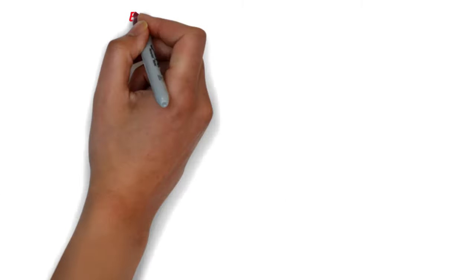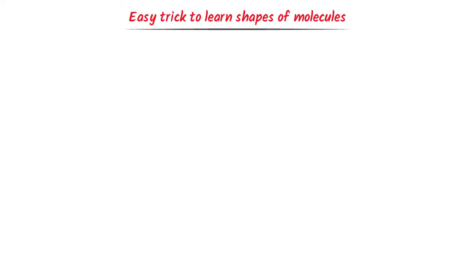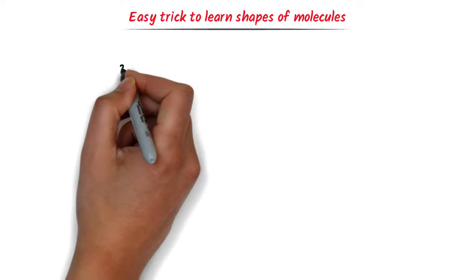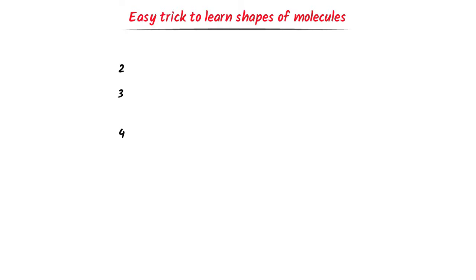What is the super easy trick to memorize the shapes of molecules? Firstly, I write 2, 3, 4, 5. Secondly, I write a power for each digit. I start from 1, 2, 3, 4. Now listen carefully.